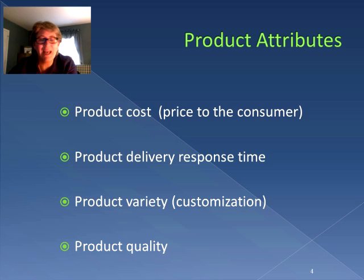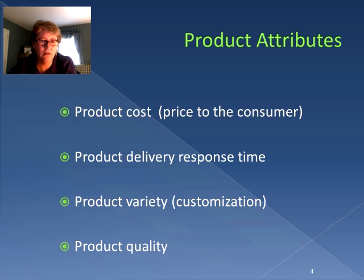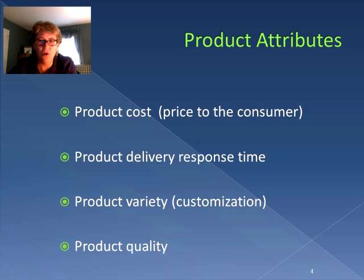In addition, they want to know, can I make changes to this? Can I have variety? Can I customize it in some way? This is product variety. And lastly, does this product or service do what I want it to do? That's what we call product quality. Altogether, these are product attributes and that is what a customer is looking for.